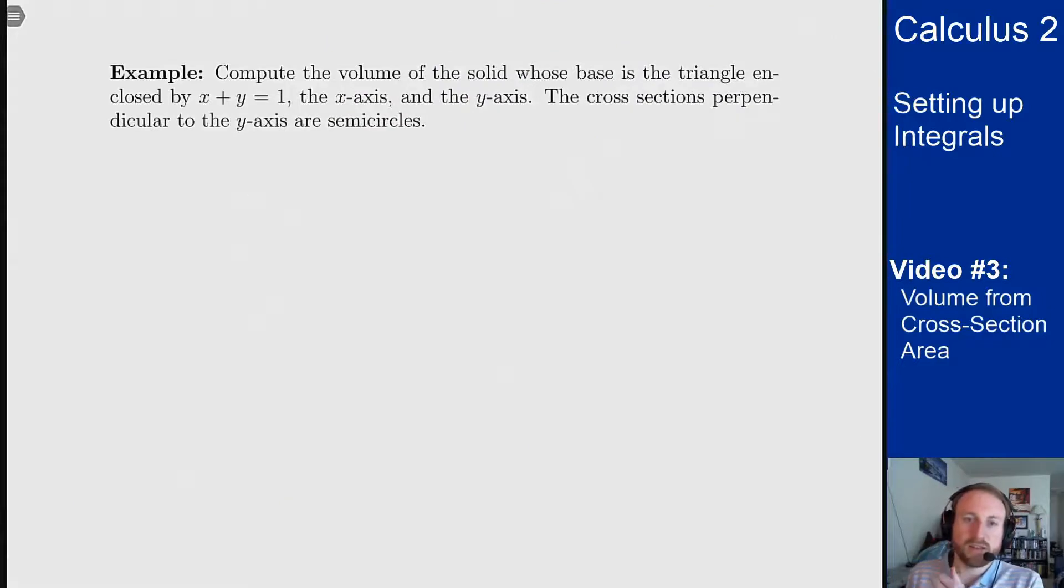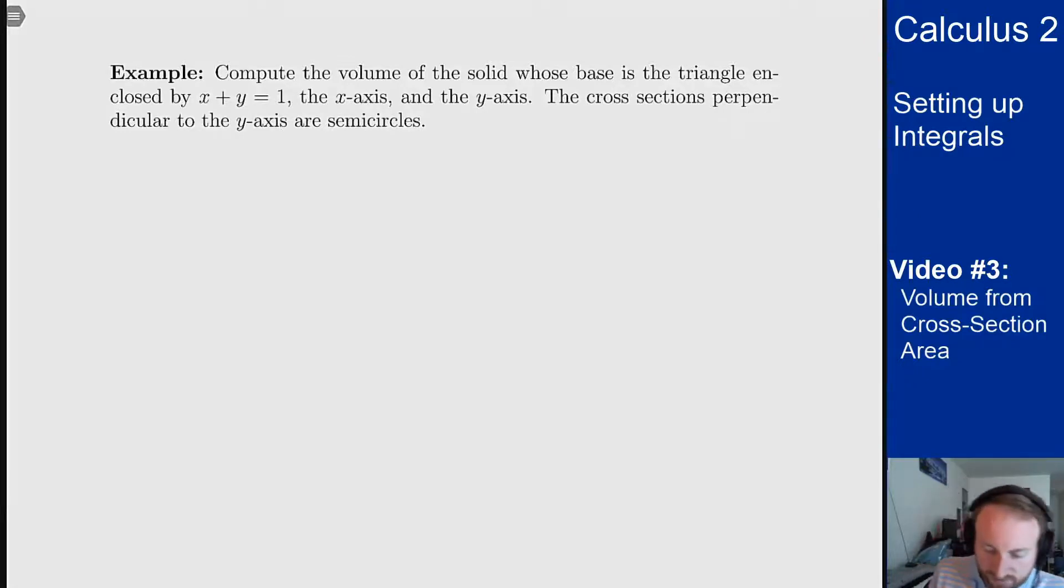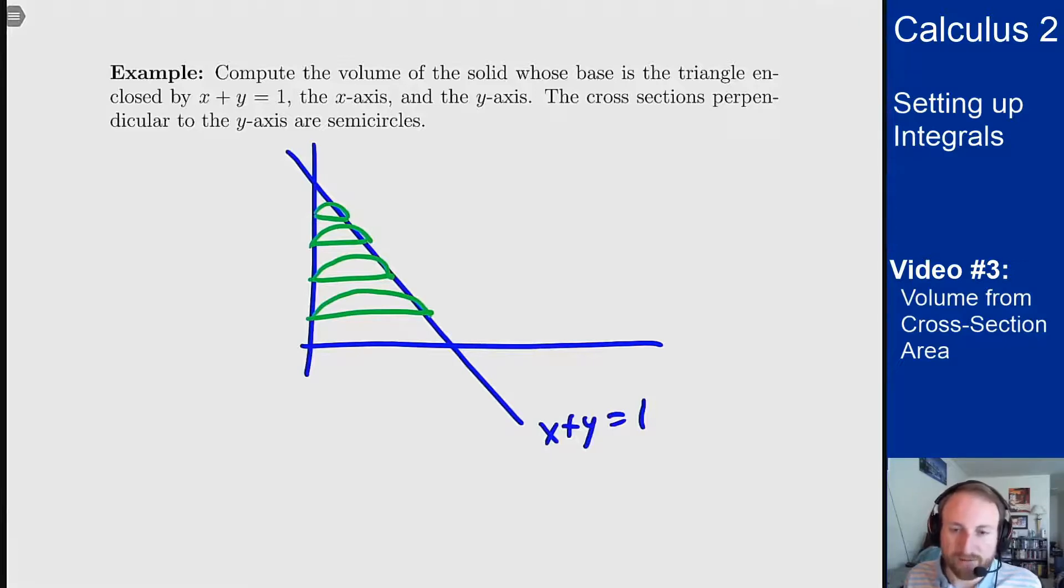So here's an example: compute the volume of the solid whose base is the triangle enclosed by x plus y equals 1, the x-axis, and the y-axis. The cross sections perpendicular to the y-axis are semicircles. So let's start by drawing a picture. You should always start by drawing a picture for these problems. So there is my region, and I'm told the cross sections perpendicular to the y-axis are semicircles, which means I know things about these cross sections here and they are all semicircles. So there's a weird like half ice cream cone shaped object.